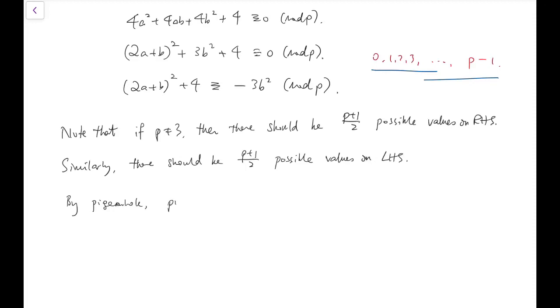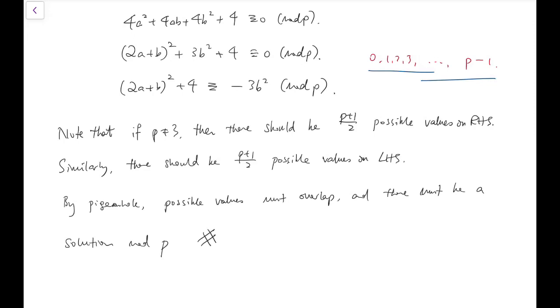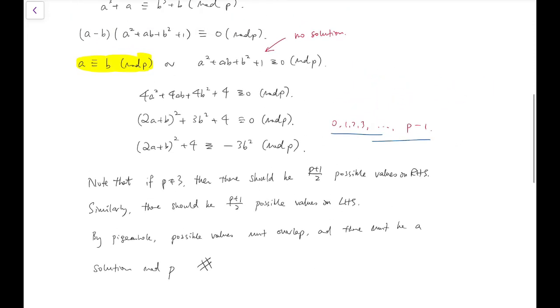So by pigeonhole, possible values overlap. And there must be a solution mod p. So there's a contradiction.